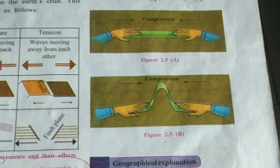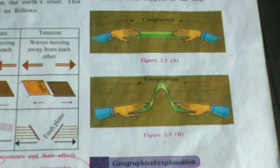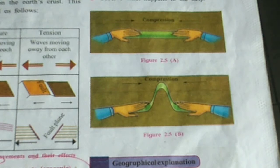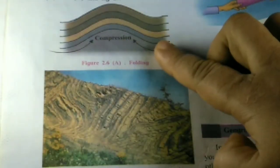Observe what happens on the strip. The geographical explanation for Activity 1: the strip was moved by placing hands on both ends. The work performed on the strip at that time is called compression. Pressure was given on the center of the strip from both ends. As a result, the strip bends and folds are formed. Similarly, due to pressure on the earth's crust, movements are generated and folds are formed. Now you know how folds are formed on the earth.